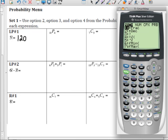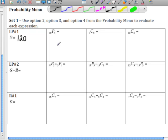10, hit math, go to probability, and you'll see the permutation function is choice two. Then enter the four, hit enter. And so 10P4 is equal to 5040. Let's write that down.